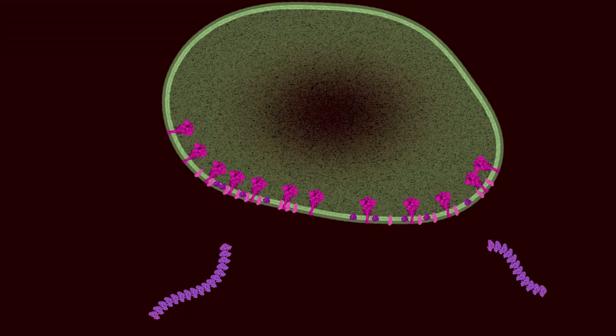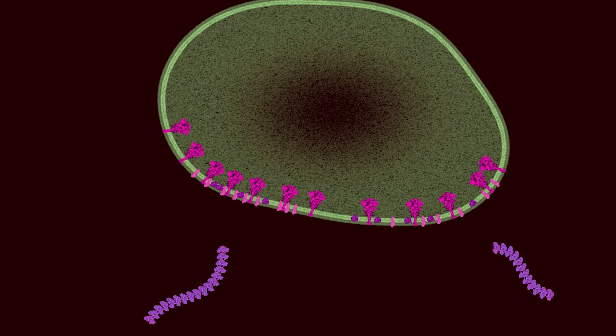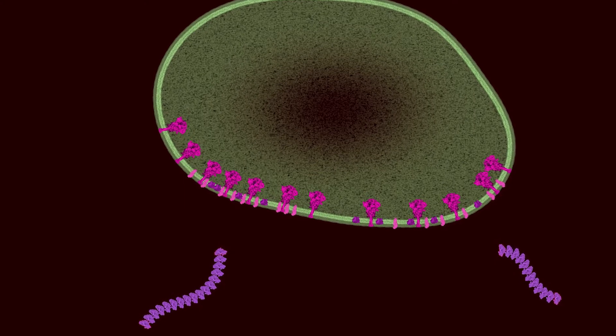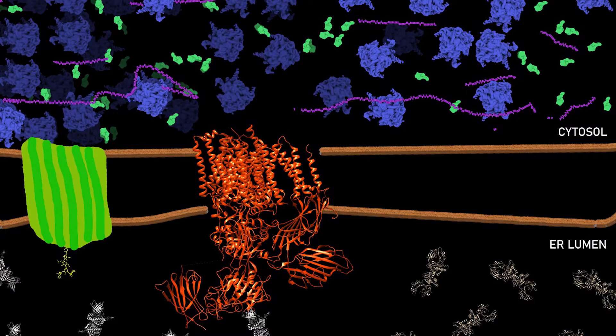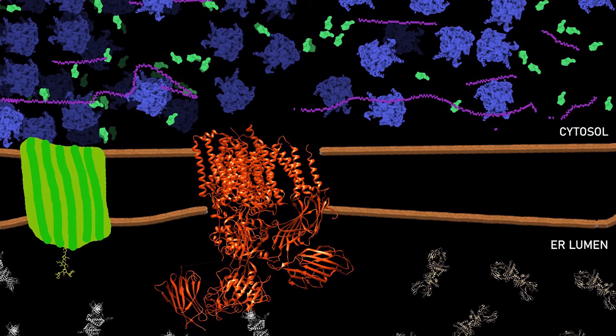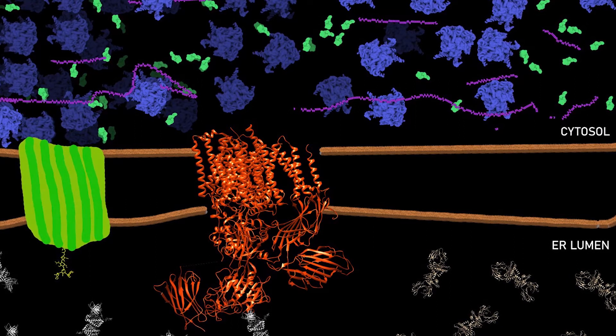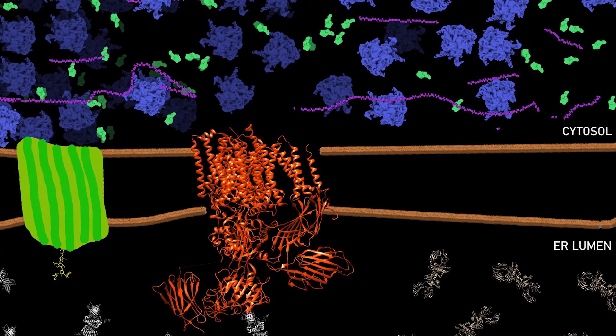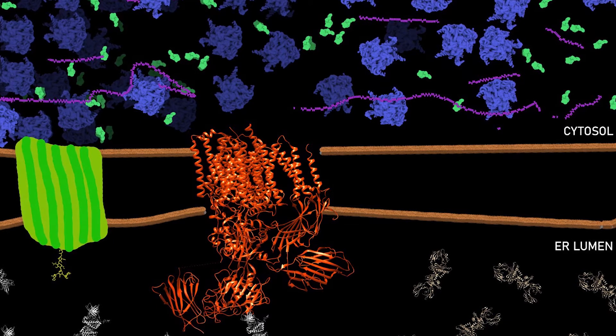Newly synthesized viral M proteins in the ER lumen need to undergo maturation in the form of glycosylation. This process requires addition of N-linked oligosaccharides. The precursor called glycan is synthesized in the ER membrane and bound to a lipid carrier protein.